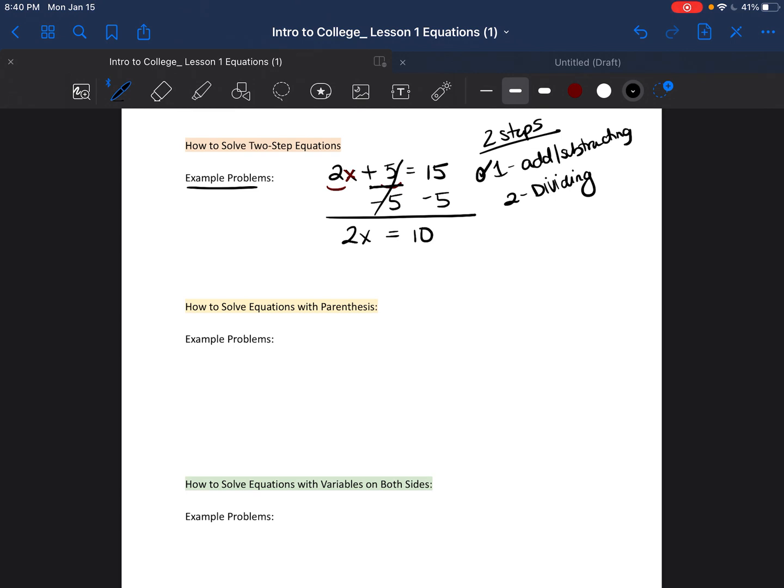So we did our first step, which was add or subtract the number that is not attached to the x. The second step is going to be dividing. Why are we dividing? Well, as we learned in the last video, anytime you have a number next to a variable, they're actually being multiplied. So if we want to get rid of that number, we have to do the opposite, which is dividing. So we're going to divide both sides by that number 2 that we're trying to get rid of. The 2s cancel each other out, and you're left with x is equal to 5.